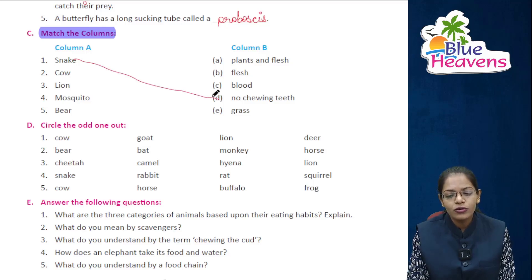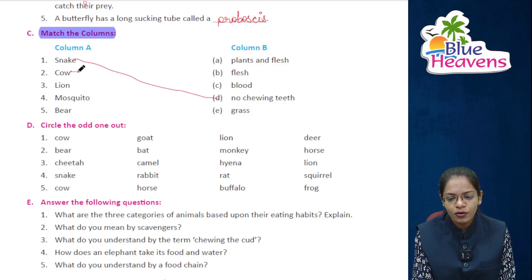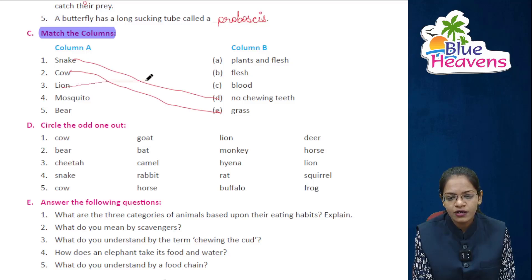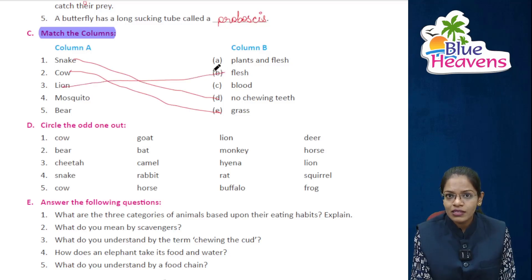Cow — eats grass — matches E. Lion — flesh-eating animal — matches B. Mosquito — sucks blood — matches C.